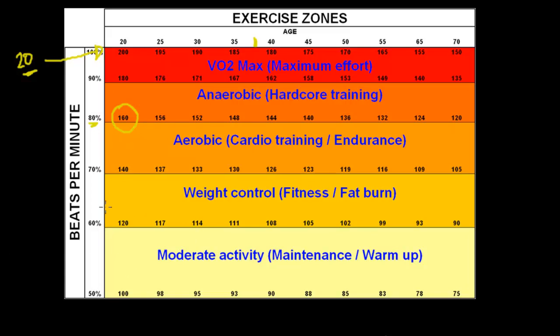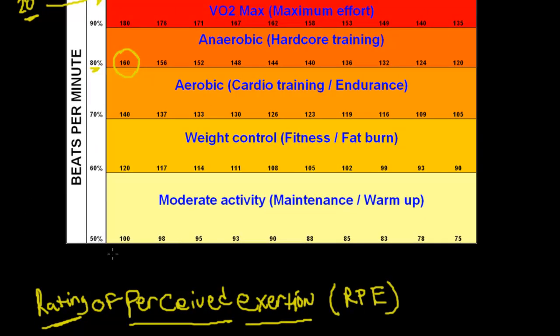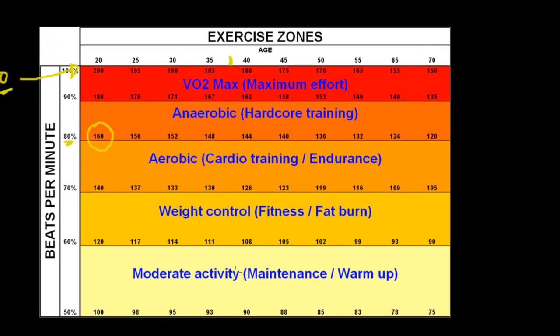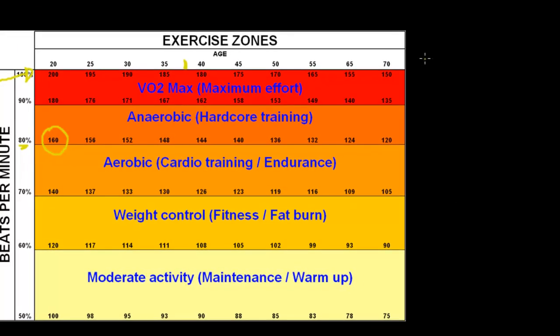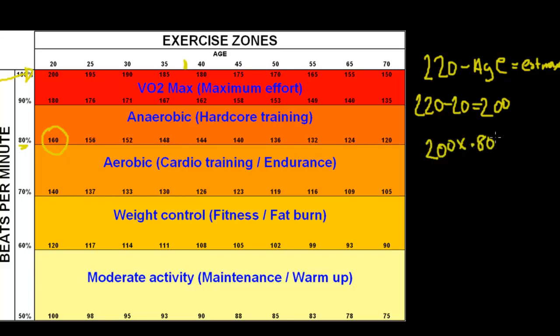But if you remember back to the last video, if you're just an individual that hasn't trained most of their life, you would take, let's go back over here real quick so that you can see this. So 220 minus your age would equal your estimated max heart rate. So for a 20 year old person, 220 minus your age would be around 200. So for your 80%, you take 200 times 0.80 for a 20 year old person. And that would be 160.